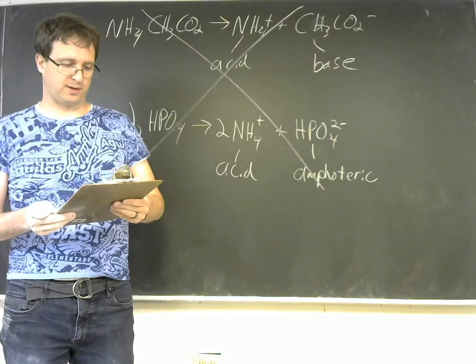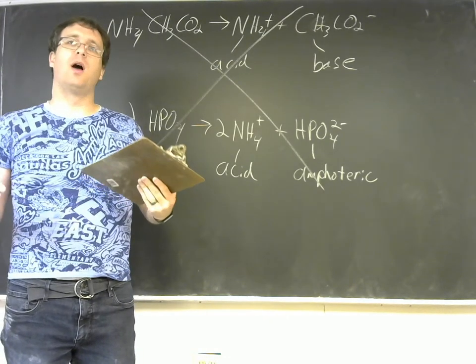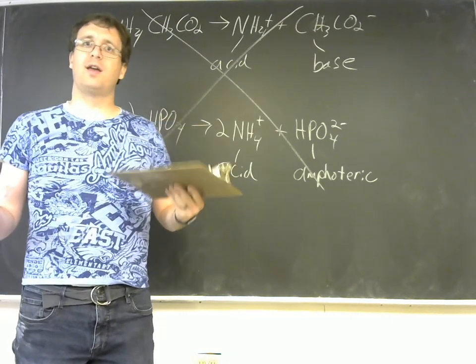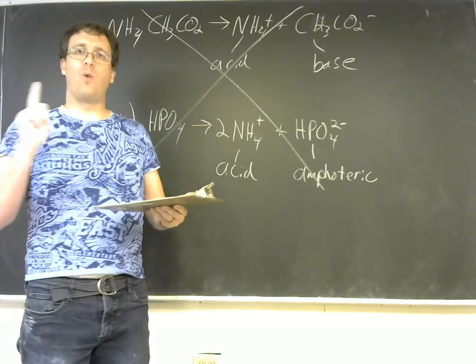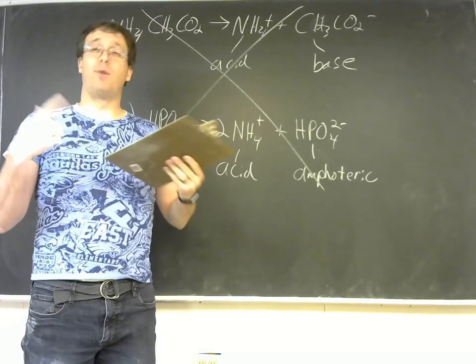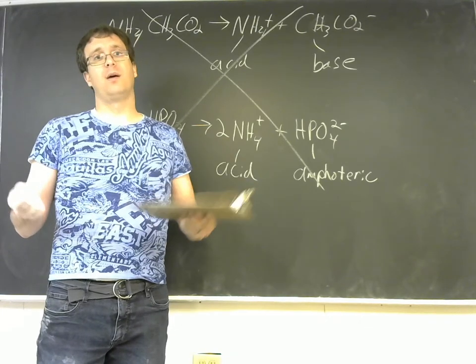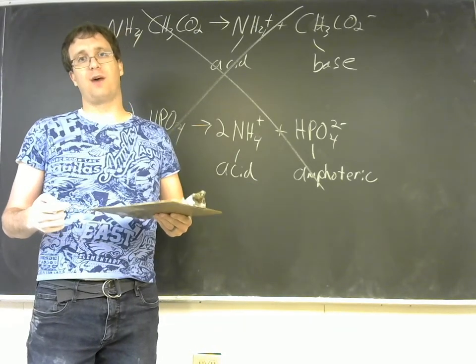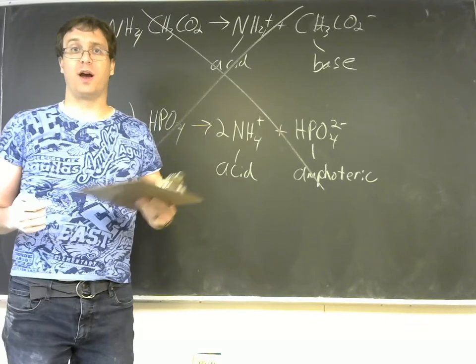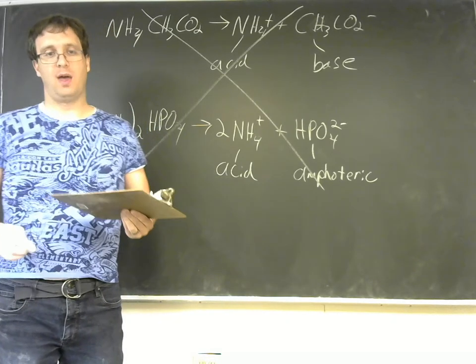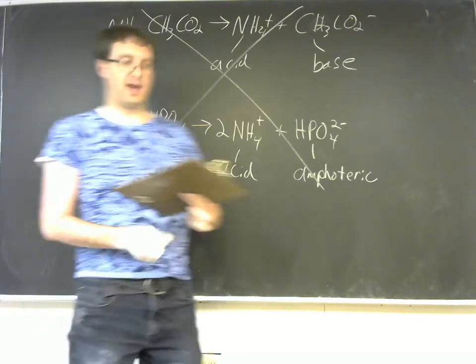It'll all come down to looking at the cation and the anion. One and at most one will have acidic or basic properties. And that will govern the properties of the ionic compound as a whole. Okay, and with that, that concludes chapter 10 for us.